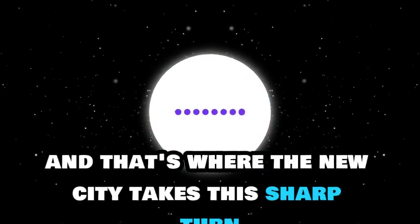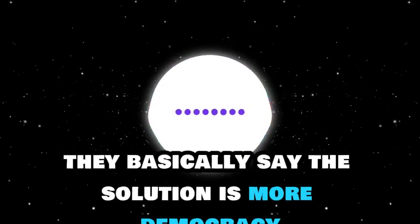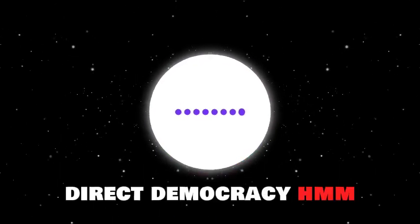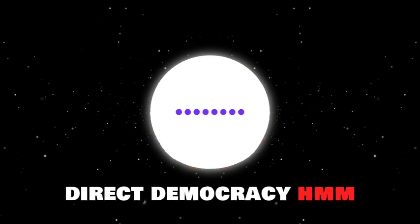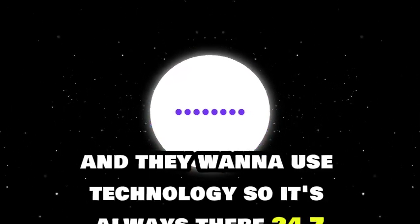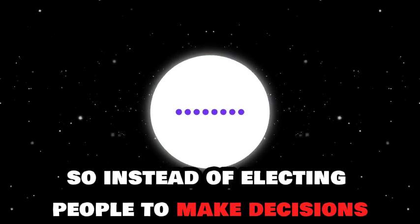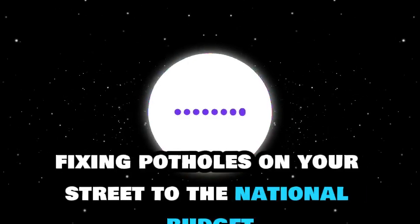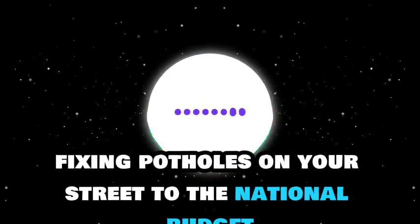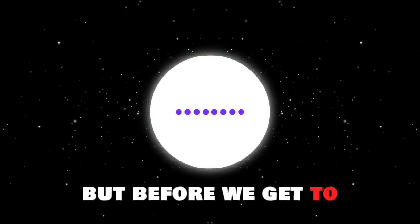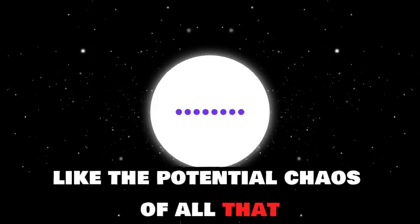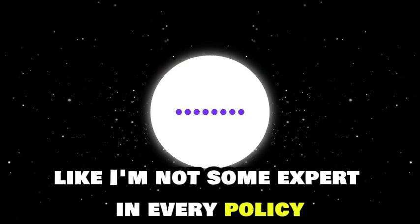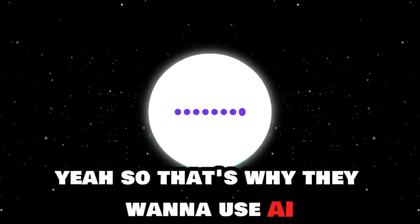And that's where The New City takes this sharp turn. They basically say the solution is more democracy. More democracy, but not the kind we have now. Direct democracy. And they want to use technology, so it's always there, 24/7. So instead of electing people to make decisions, we'd be voting on everything ourselves. Everything from fixing potholes on your street to the national budget.